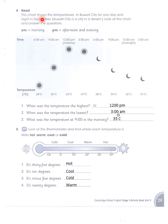This chart shows the temperatures in Kuwait City for one day and night in September. Kuwait City is a city in a desert. Look at the chart and answer the questions. This chart is telling us the temperatures for the whole day in Kuwait, which is a city in the desert.